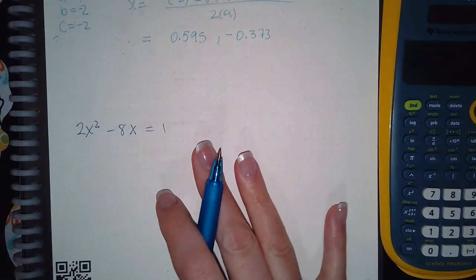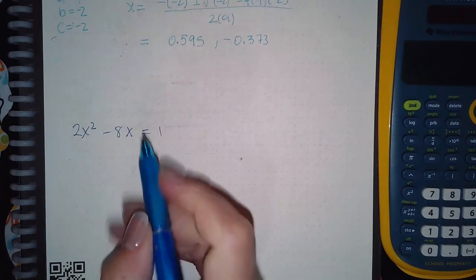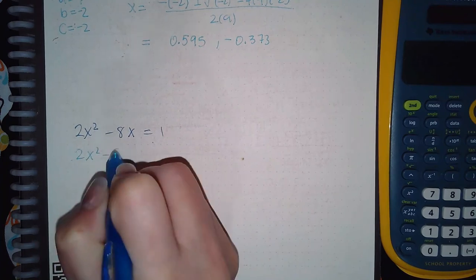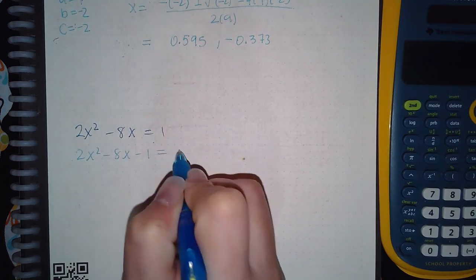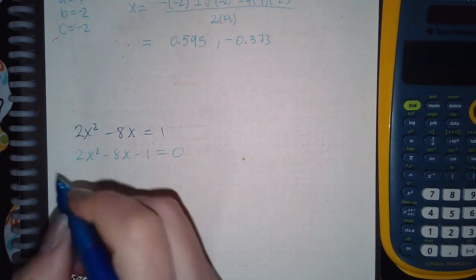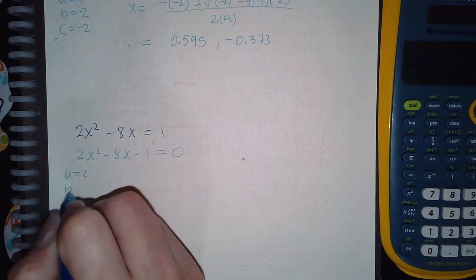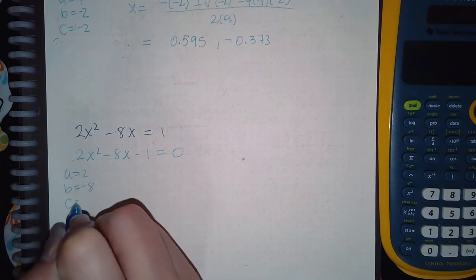So this problem is very similar. It does have to be equal to zero, so I'm going to move it over, it will become a negative 1, and then there will be nothing left on this side. So a is 2, b is negative 8, and c is negative 1.